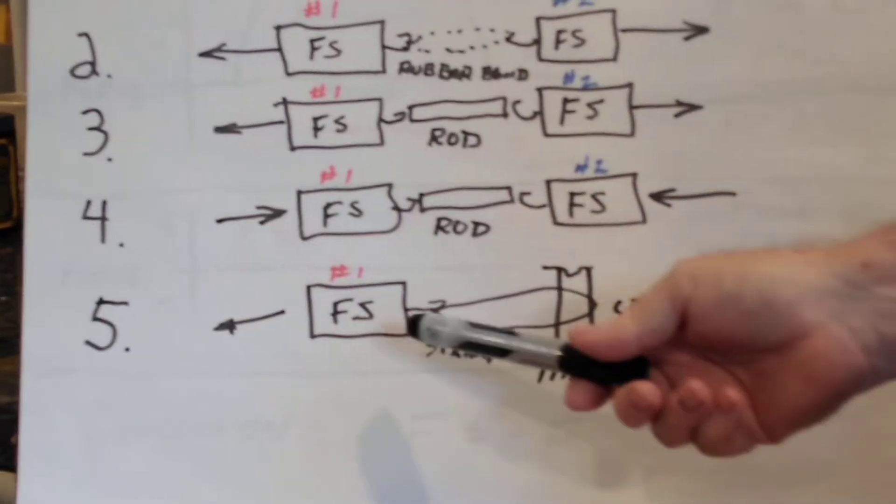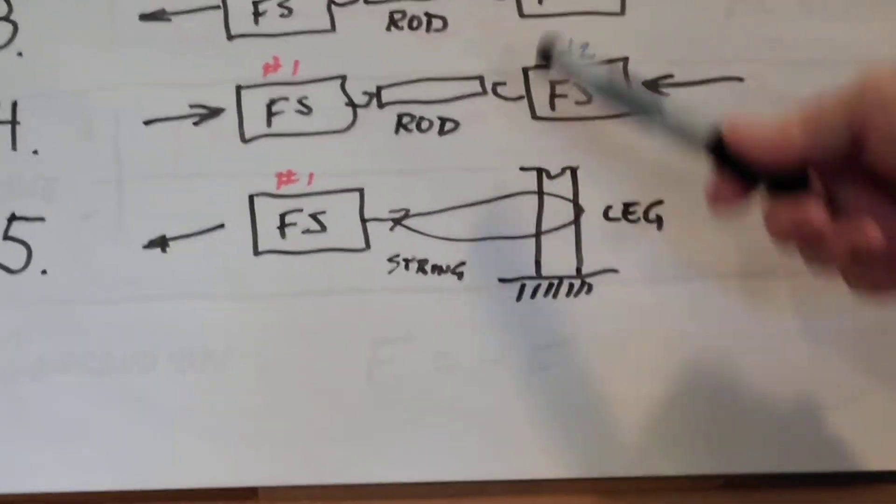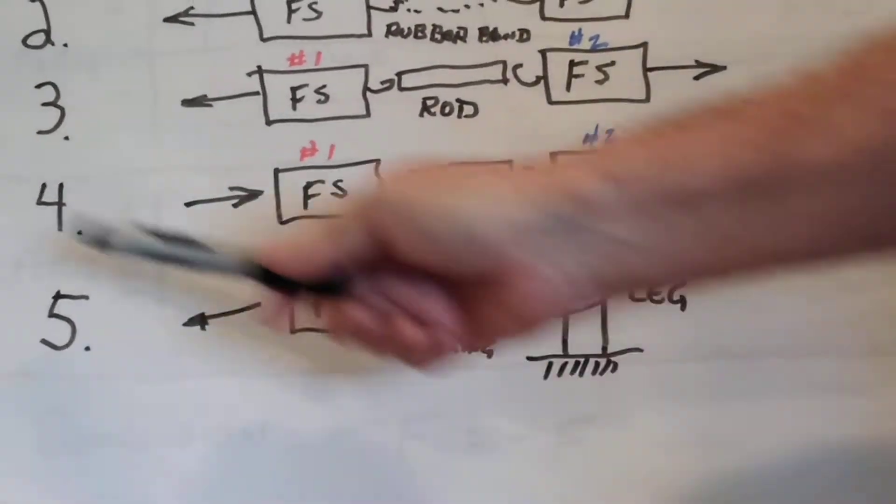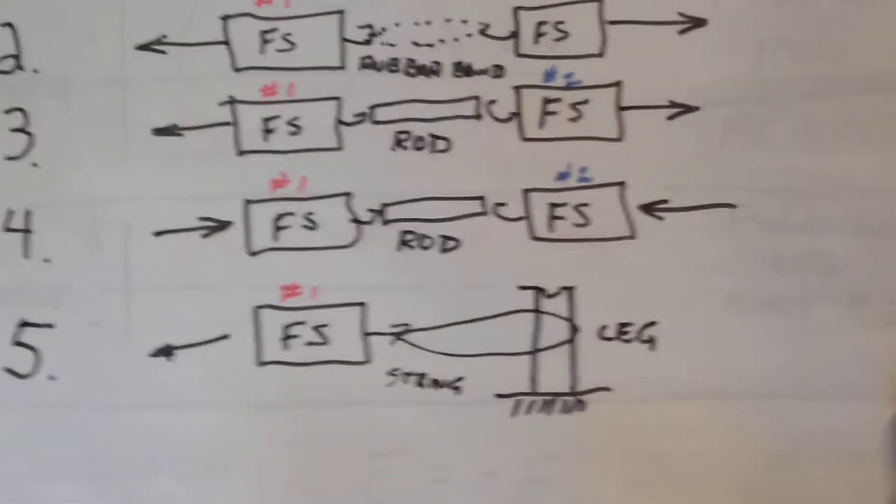In our final scenario we're only using one force sensor, which we're tying to the leg of one of the tables in the lab with a string. We're pulling on it and we want to see what the computer reaction is.